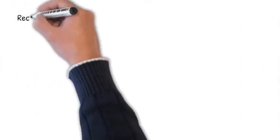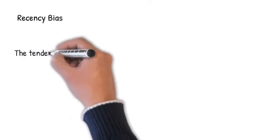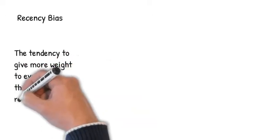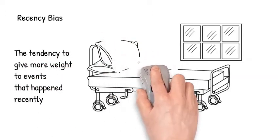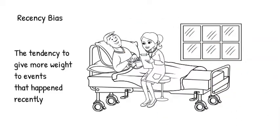Recency bias is the tendency to give more weight to events that happened recently. An example of this might be when a physical therapist detects a wider-than-normal pulse of a patient's aorta during abdominal palpation, and it turns out to be an aortic aneurysm. Then for the next month or so, the physical therapist palpates every patient's aorta regardless of risk factors.